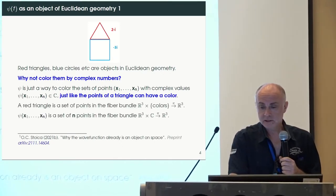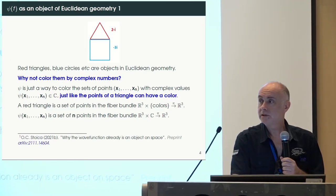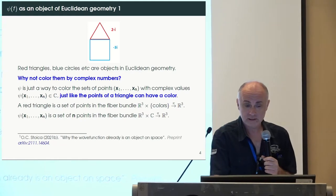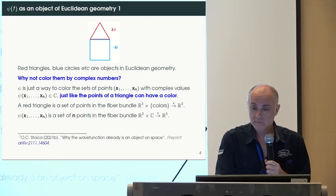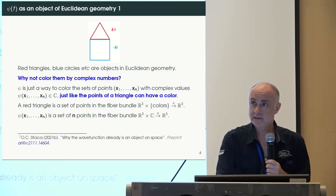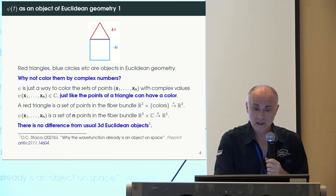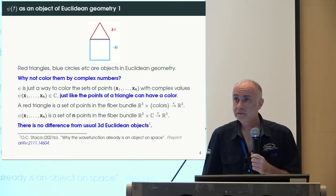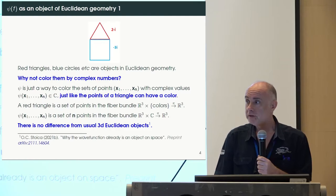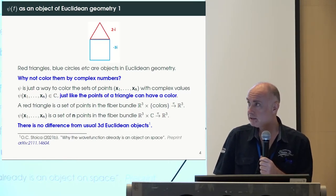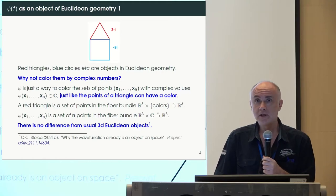This is a description in terms of fiber bundles over a base manifold, which is Euclidean space. The fiber in the first case is the set of colors; in the second case, it is the set of complex numbers. There is no difference from this point of view. You can have all the information from the wave function encoded in this way, just like Euclidean figures we use in school.